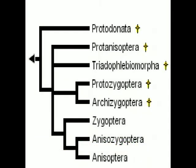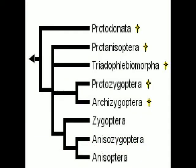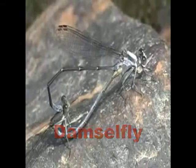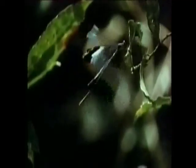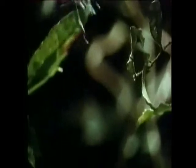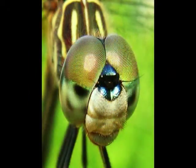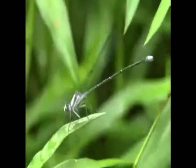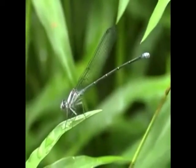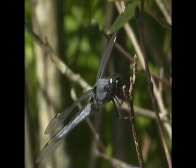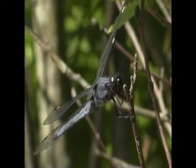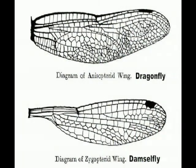With only minor differences between them, similarities include mating, general shape, and behavior. The most obvious differences are the eyes — a damselfly's eyes are outset while a dragonfly's eyes are inset. At resting position, the damselfly holds its wings parallel to the body while the dragonfly's wings are outstretched. The wings also differ in form and structure, as shown in the diagram.